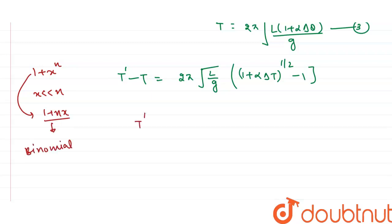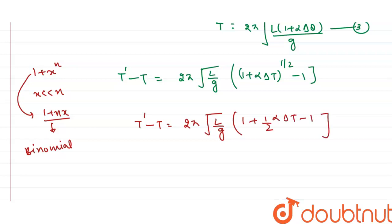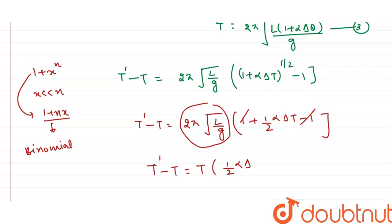After the 1's cancel, T' - T = 2π√(l/g) · ½α·Δθ. Since 2π√(l/g) equals T, we can write T' - T = T · ½α·Δθ. Therefore, ΔT/T = ½α·Δθ, where Δθ is the change in temperature.